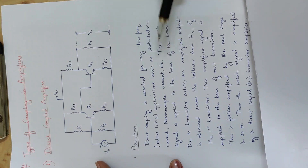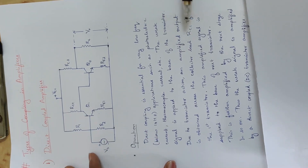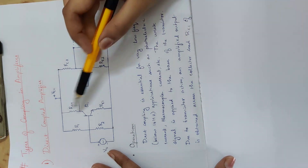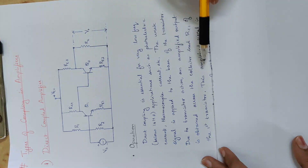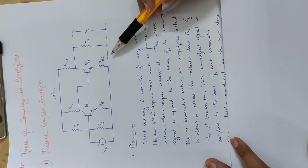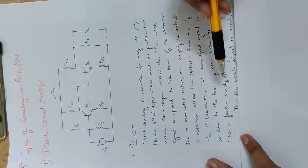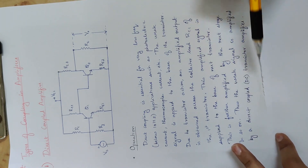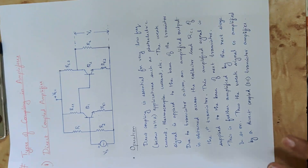A weak signal is applied to the base of the transistor. Due to transistor action, an amplified output is obtained across the collector load. This amplified signal is supplied to the base of the next transistor, where it is further amplified by the next stage, and so on. Thus the weak signal is amplified by a direct coupled transistor amplifier.